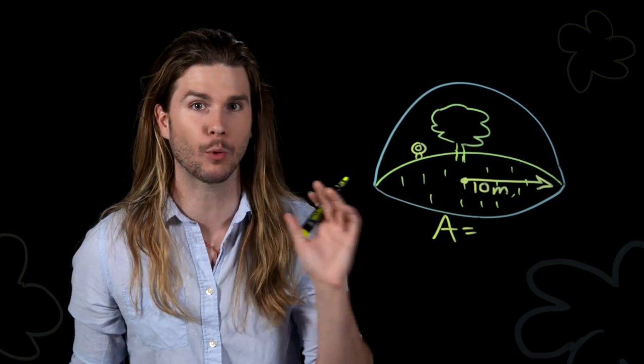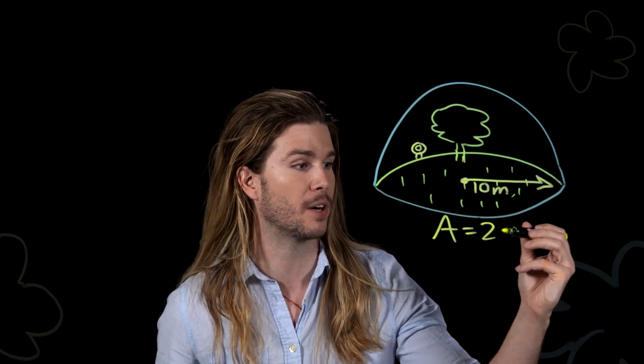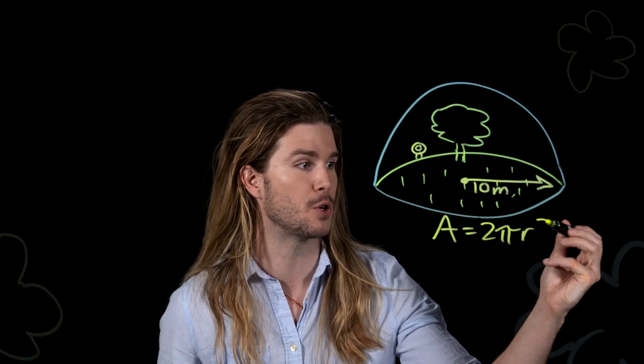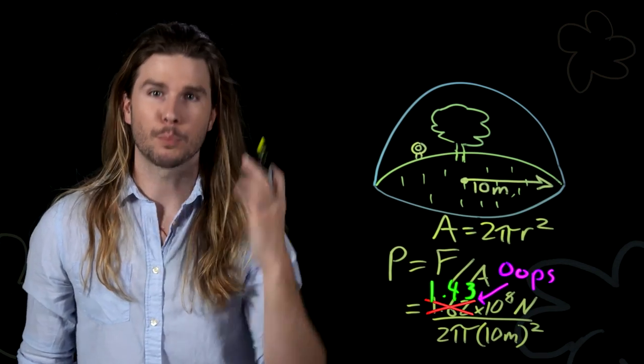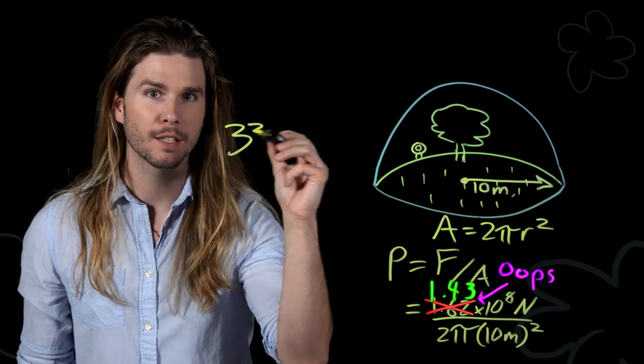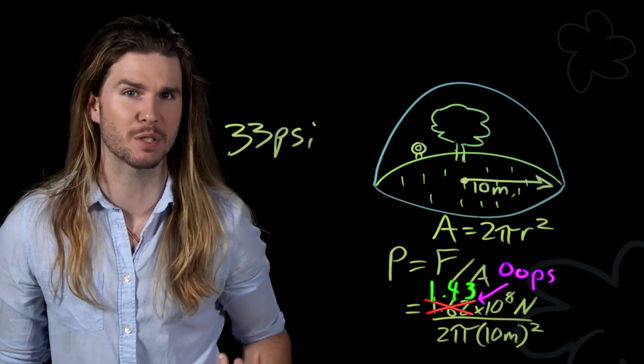We already know it has a radius of 10 meters, and from geometry, we know that the outside surface area of a hemisphere is equal to two pi r squared. Doing a bit more math, the pressure comes out to 33 pounds per square inch, or just over two atmospheres worth of pressure.